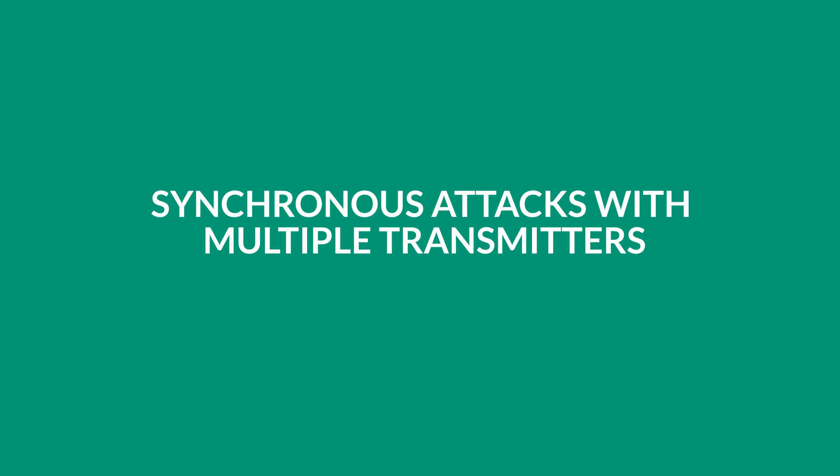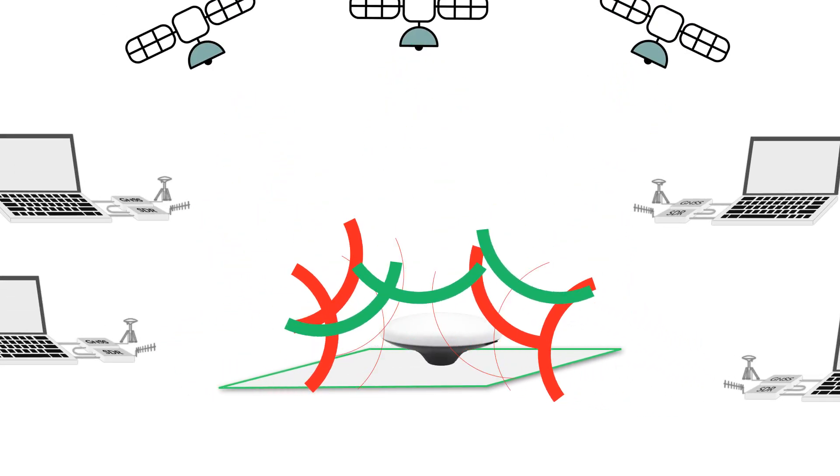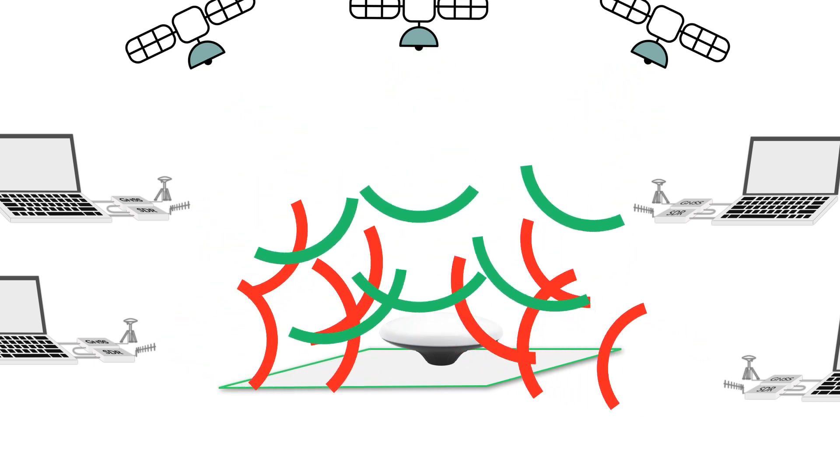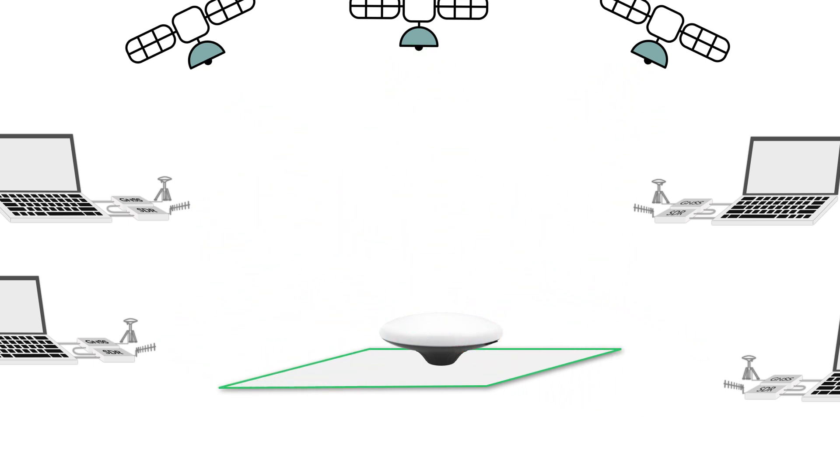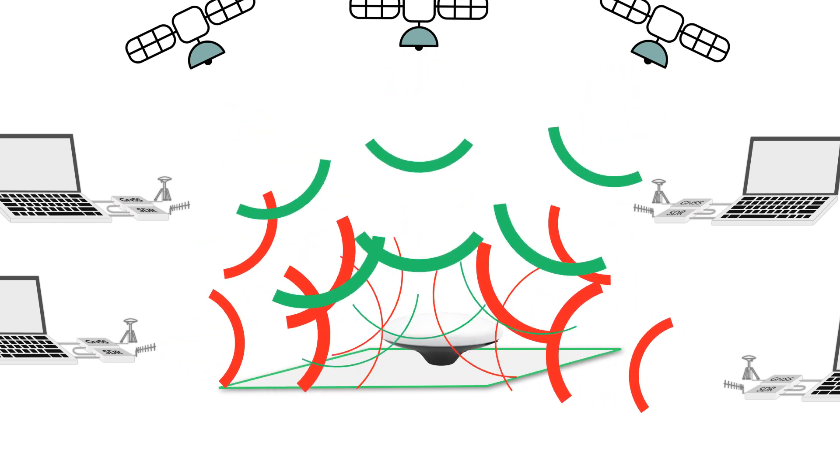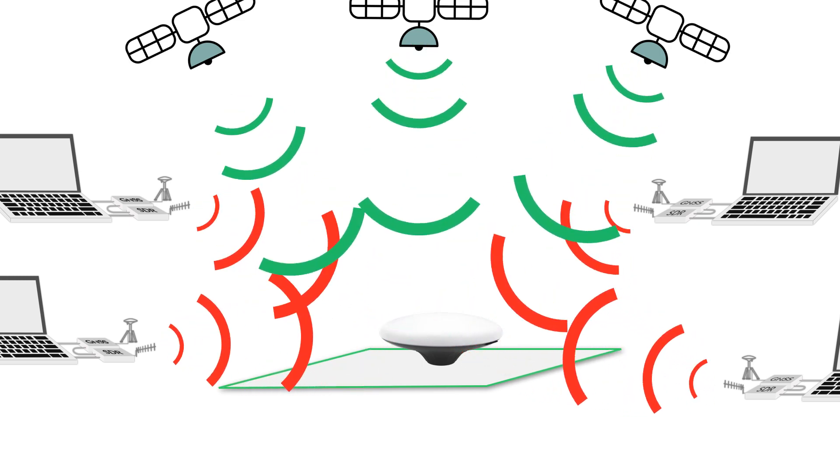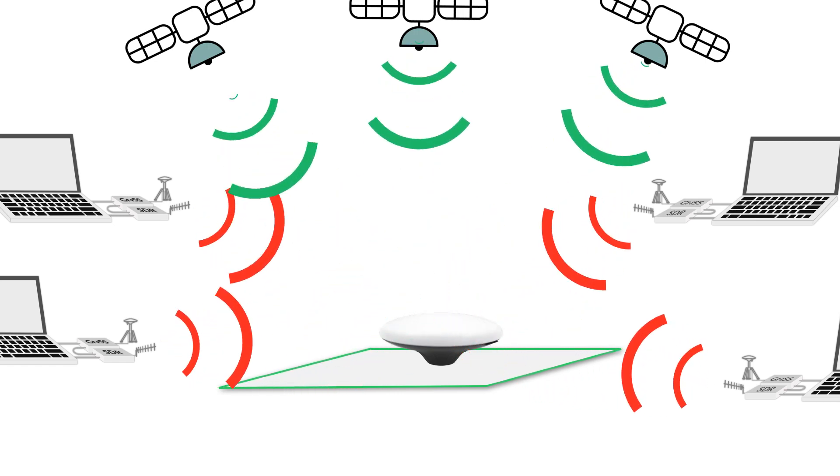Synchronous attacks with multiple transmitters are the most sophisticated and expensive attack scenarios. In this case, an intruder uses several distributed GNSS spoofers with precise synchronization. Each spoofer generates a signal from one or two satellites. It's the most challenging case scenario to detect because signals come from multiple directions, and it is difficult to make a distinction between spoofing and multi-path effects.